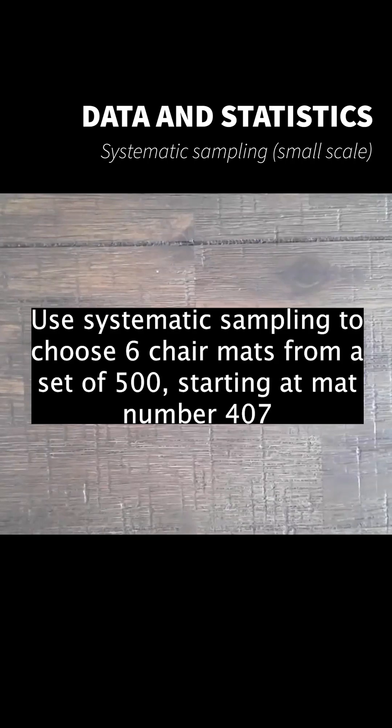Systematic sampling is where we choose a sample by taking regular intervals from a list, numbers, values, or items.